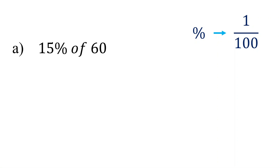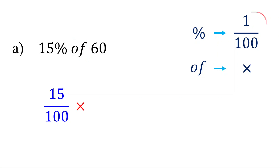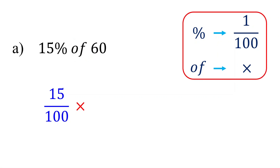So in our example, when we say 15%, it means 15 over 100. Second, the word 'of' implies multiplication. So we replace it with a multiplication sign. Please keep this in mind.